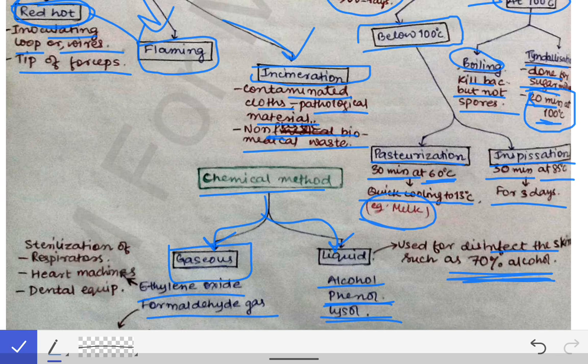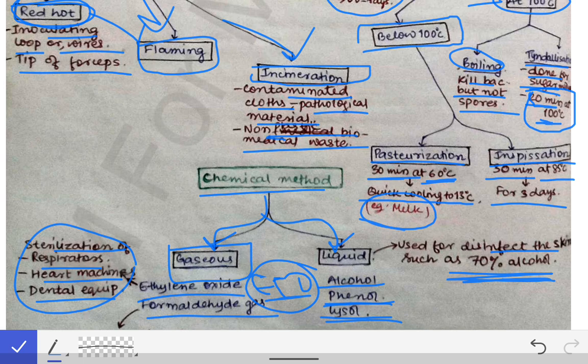In gaseous chemical methods, we have ethylene oxide (ETO) and formaldehyde gas. ETO — ethylene oxide, not ethylene tetra oxide — is used for sterilization of respirators, heart machines, and dental equipment. Formaldehyde gas is used for sterilization of operation theaters. These are all the chemicals used for sterilization of different objects.